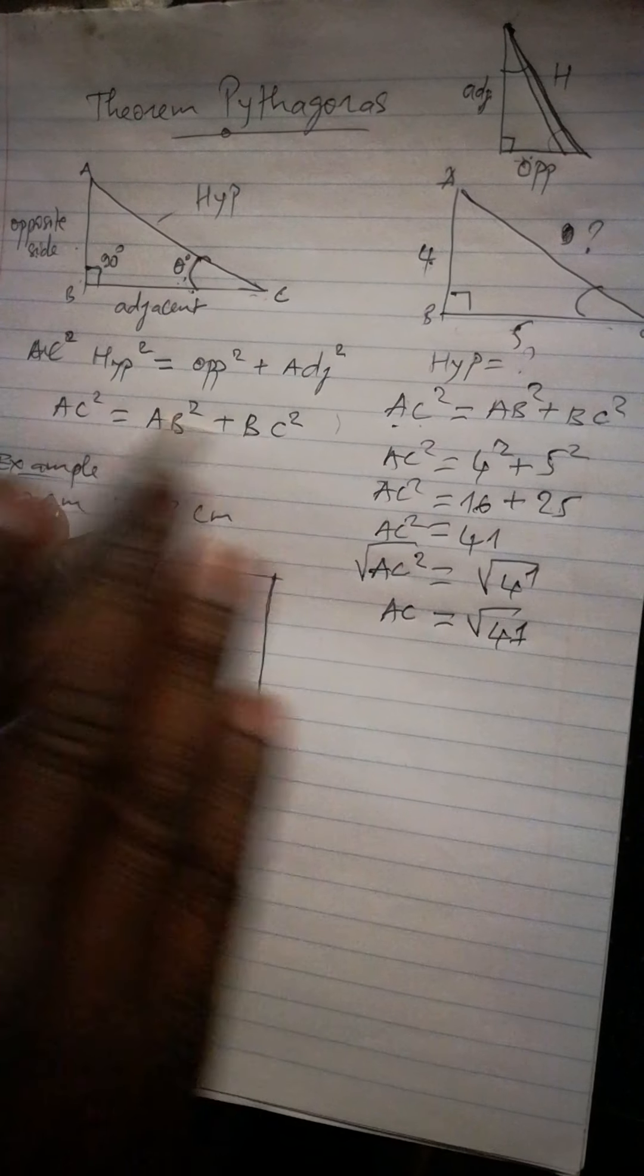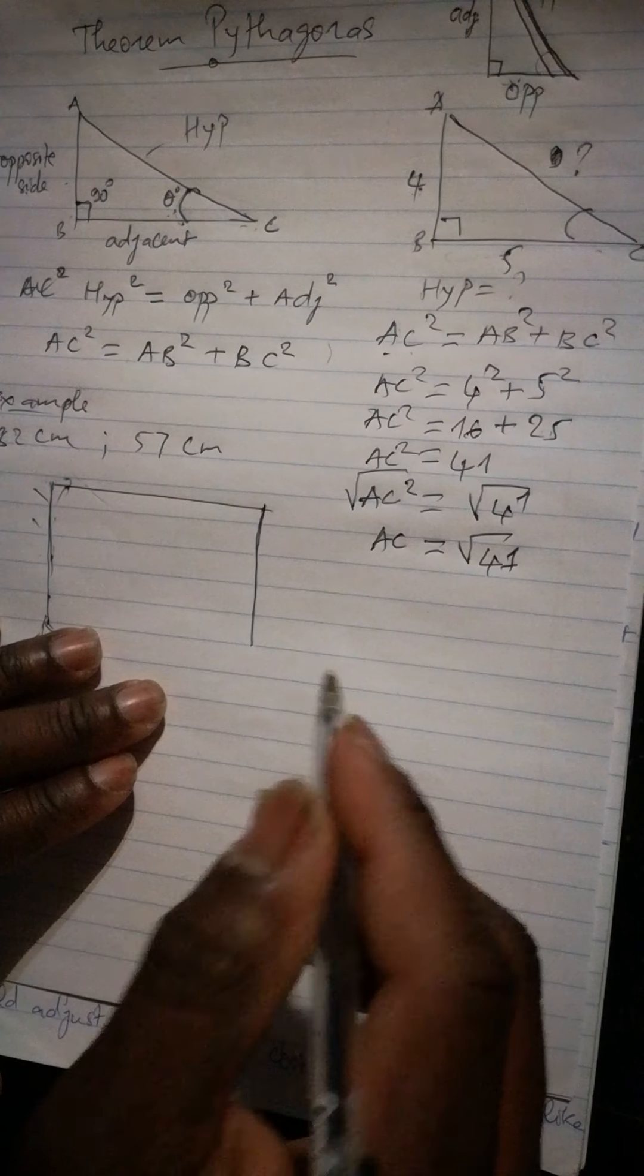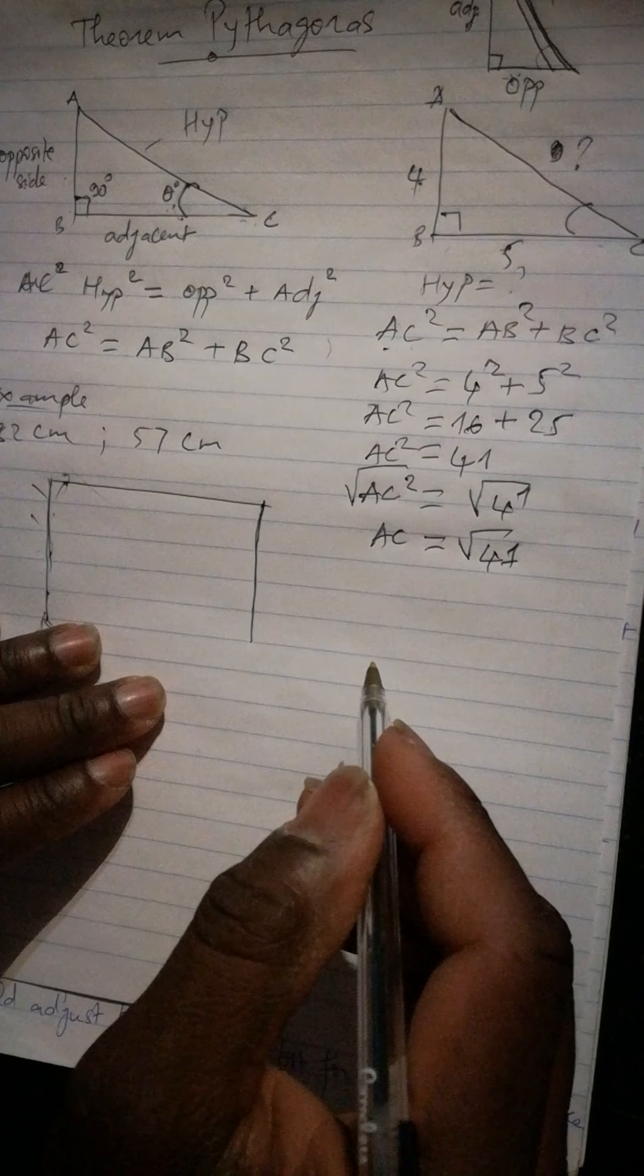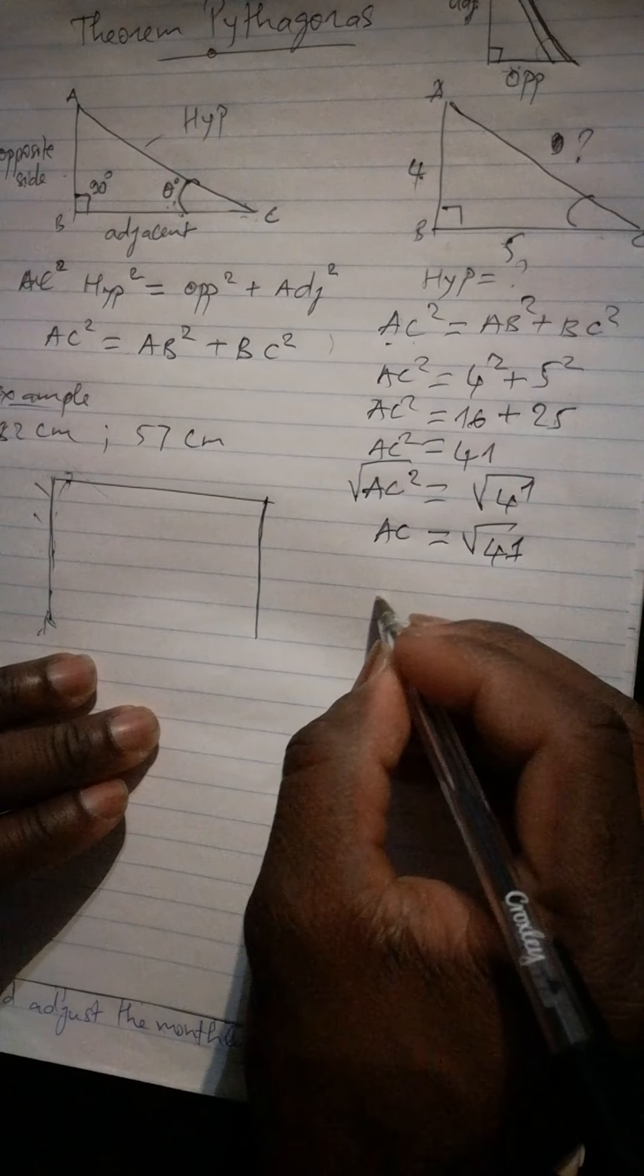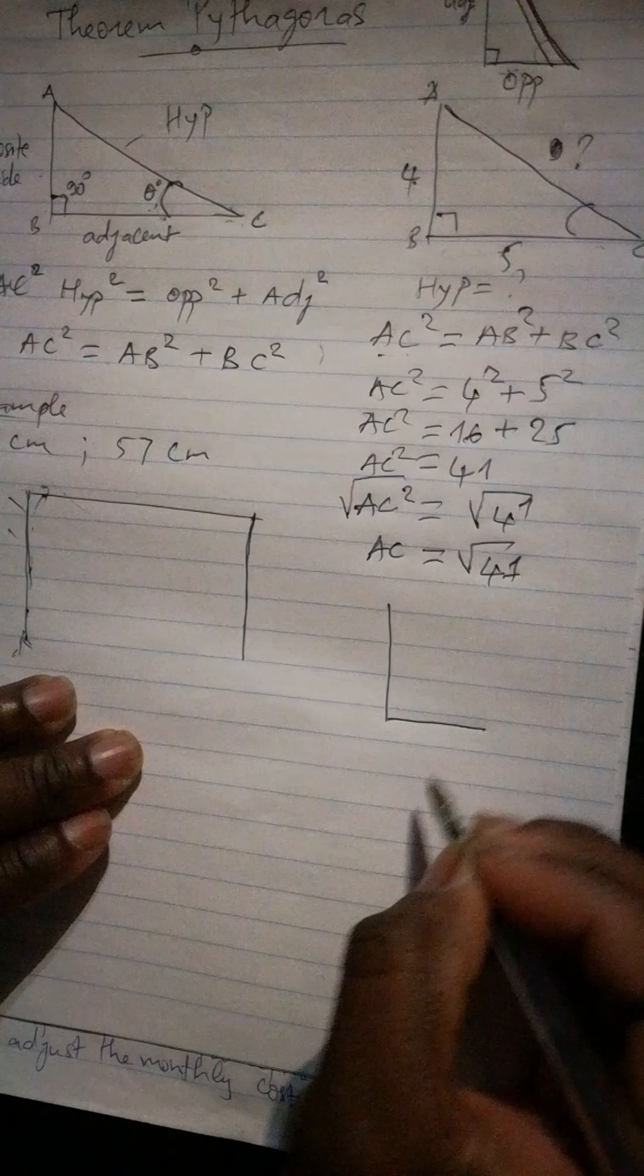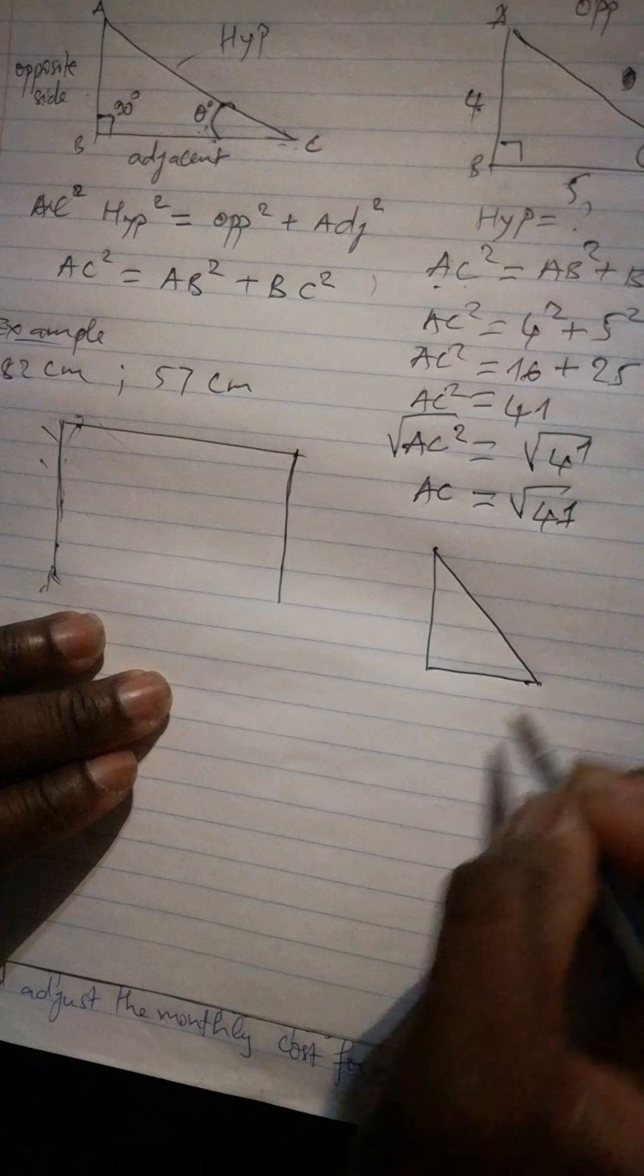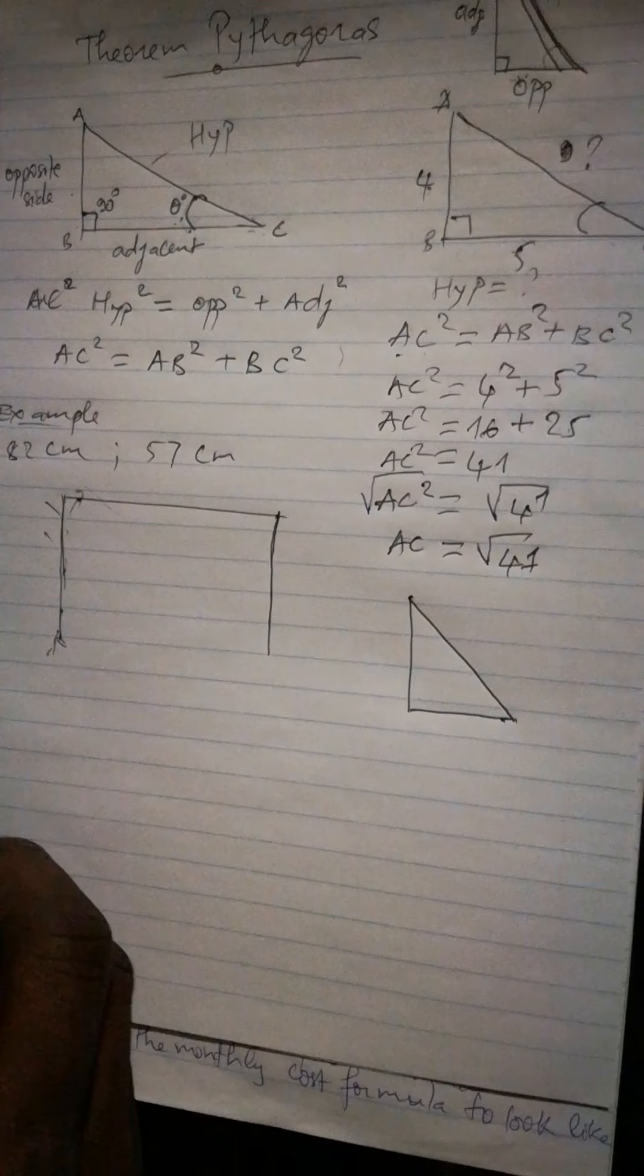And also I want to say, opposite side is always the smaller side. If you have something like this, they give you this one, and they give you here, and this one here. We can see this one is a long one, followed by this one, and this one is the smaller side.